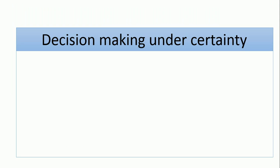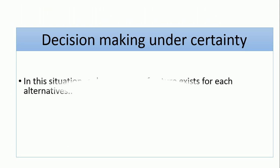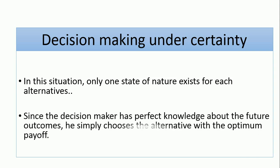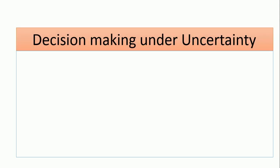Decision-making under certainty: we want to move from certainty to uncertainty. When do we say we have certainty? When do we say decision-making is certain? In this situation, you have only one state of nature for each decision alternative. Another point: the decision maker has perfect knowledge about the future outcomes and simply chooses the alternative with the optimum payoff.